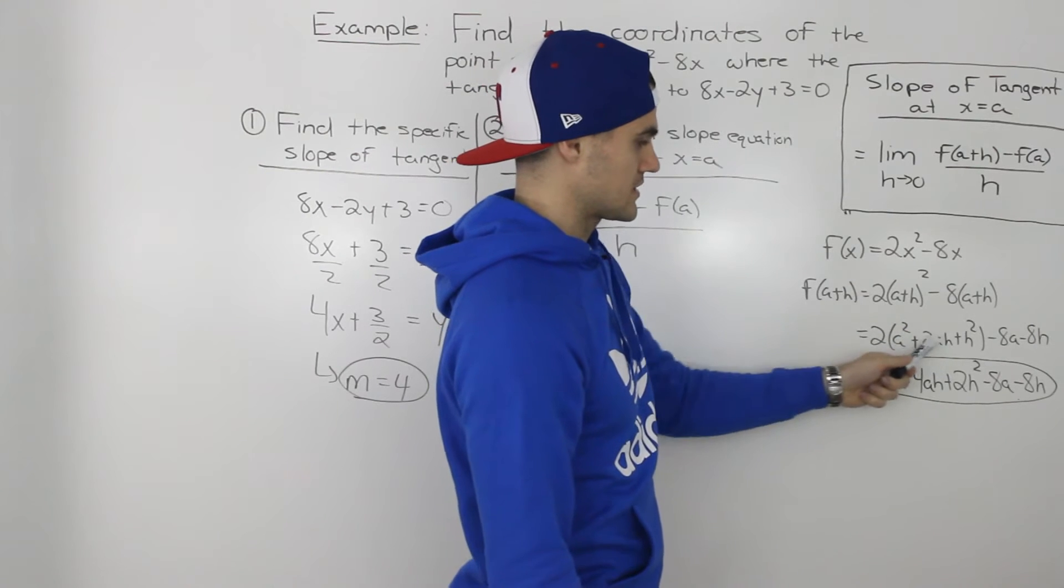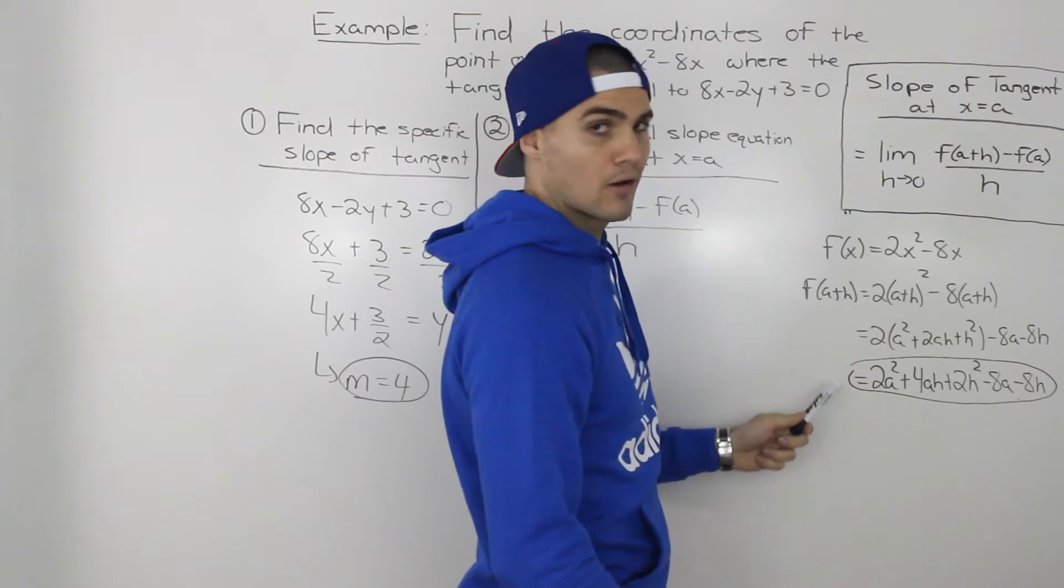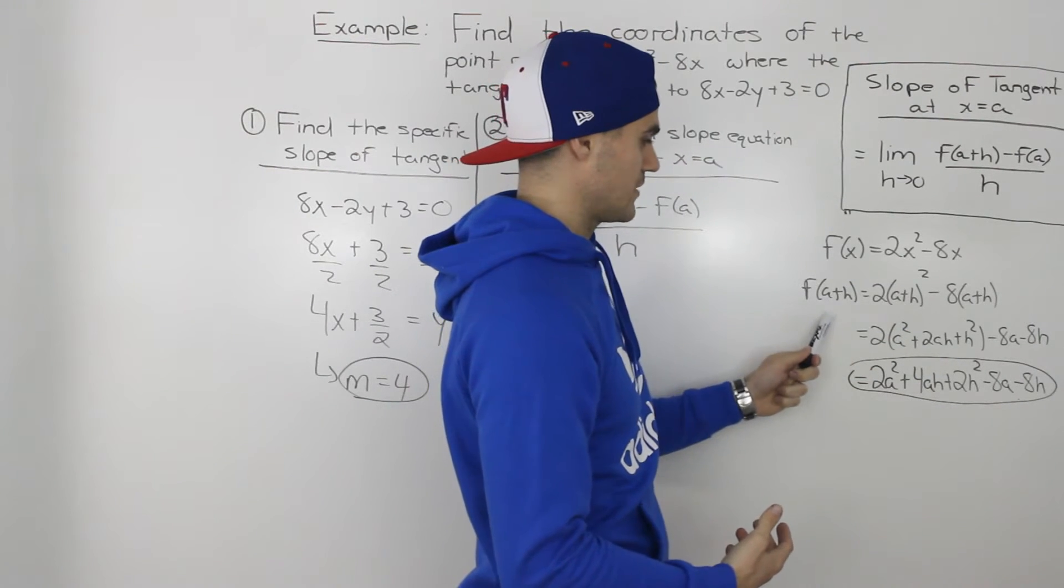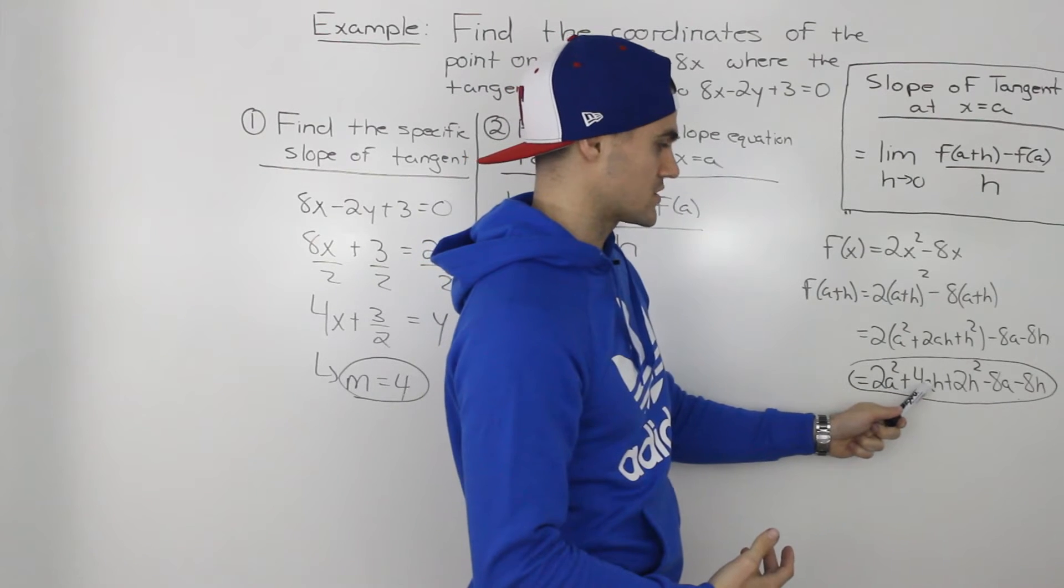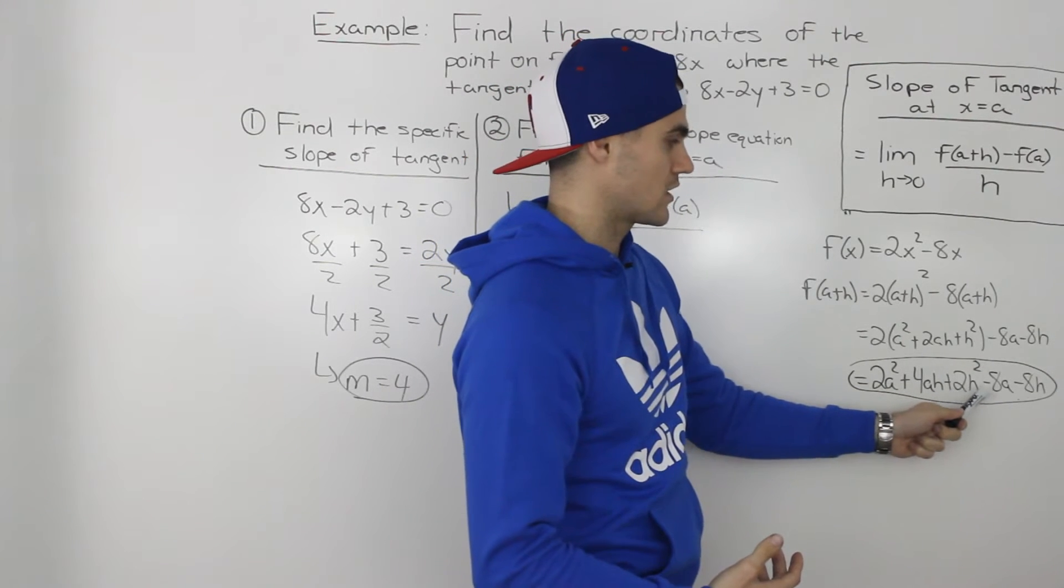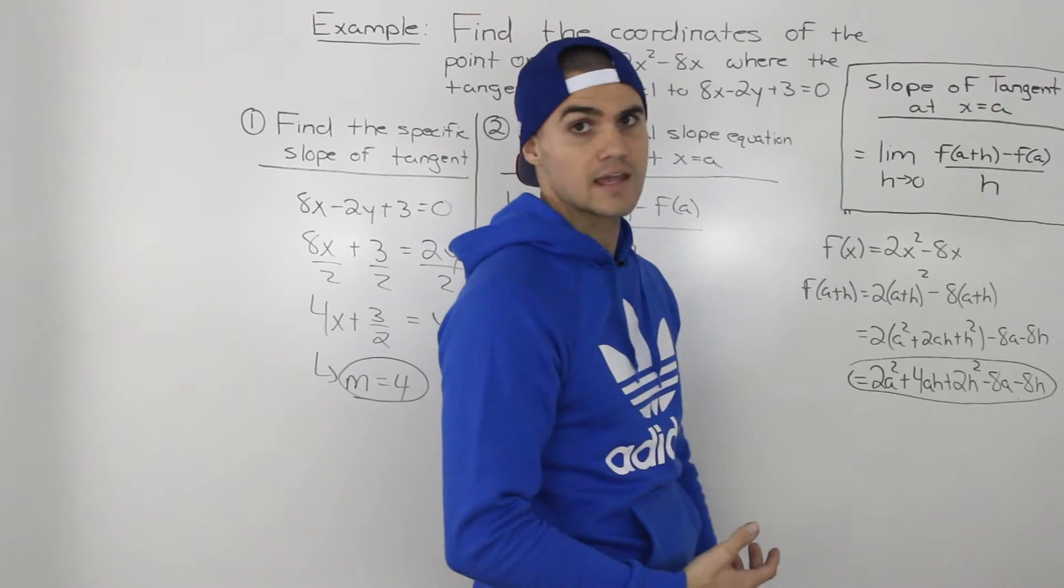And then when we distribute that 2 inside that first bracket, our final expression for f(a+h) would be 2a² + 4ah + 2h² - 8a - 8h.